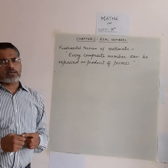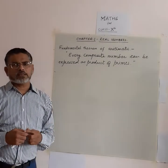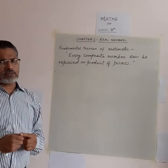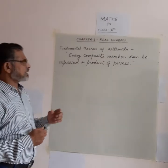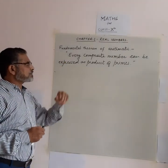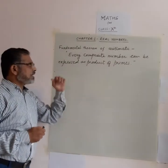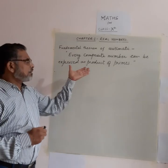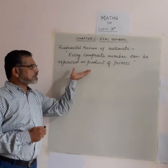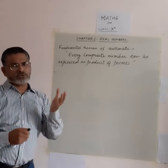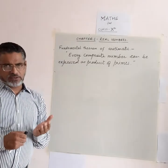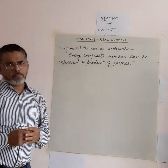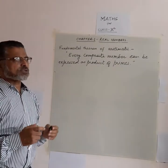Hello students, today we start the Fundamental Theorem of Arithmetic. It is a very well-known result — the statement that every composite number can be expressed as a product of primes, and this product of prime numbers is unique; their order may be changed. Let us understand this statement with an example.